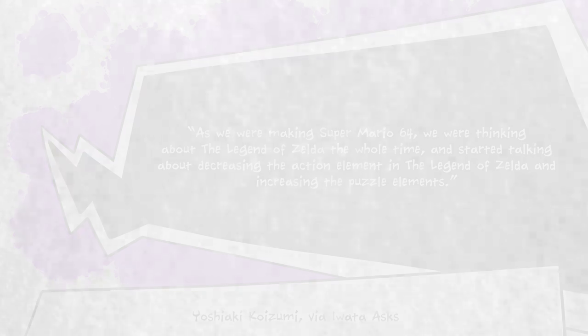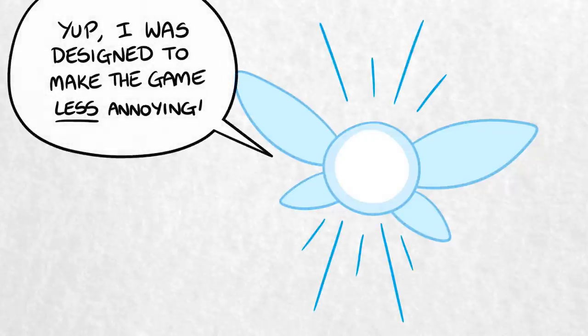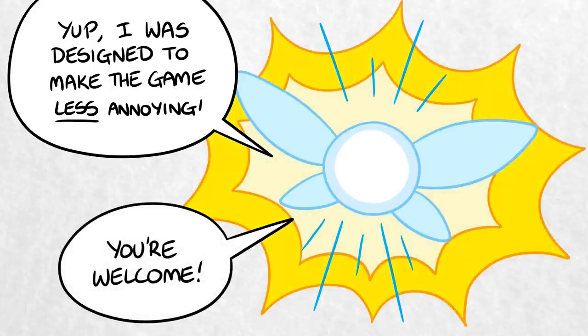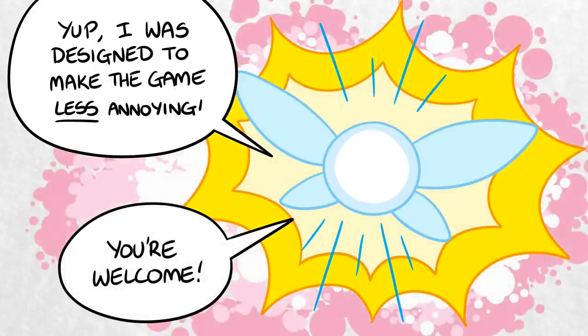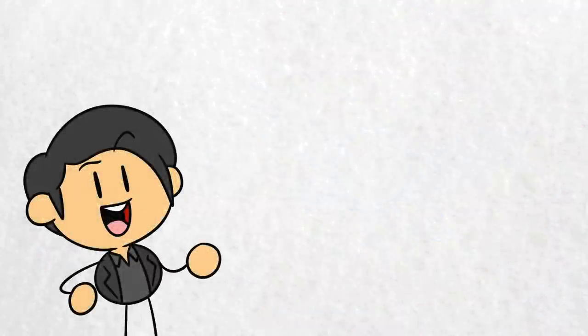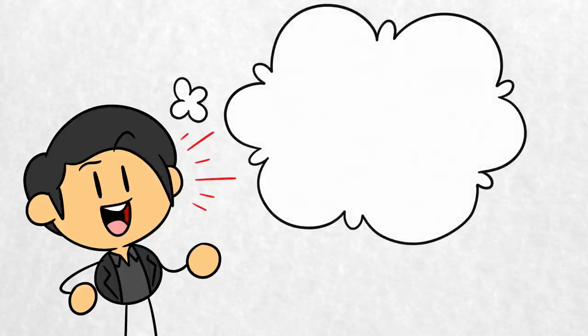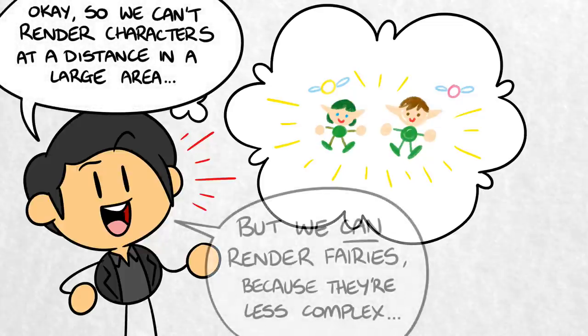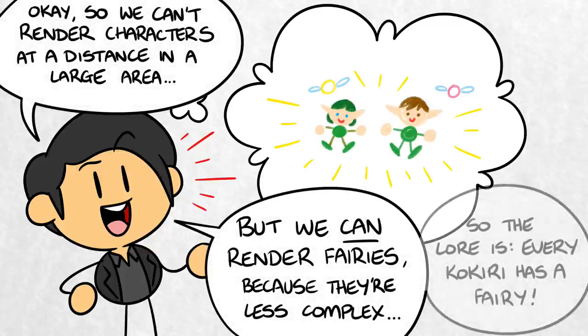For example, Z-targeting with Navi the Fairy came about largely because the team found combat in Super Mario 64 so frustrating. Toru Osawa, the game's general director, was responsible for taking the game's various gameplay gimmicks and coming up with a narrative that justified their existence. He got some help from Koizumi, always a fan of story and games, who was eager to add his own input — for instance, by naming Link's horse Epona after the Celtic goddess of horses.